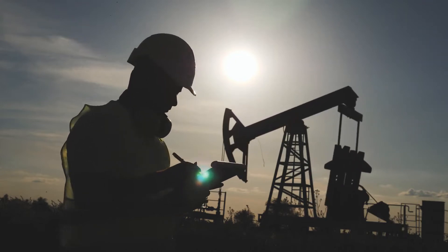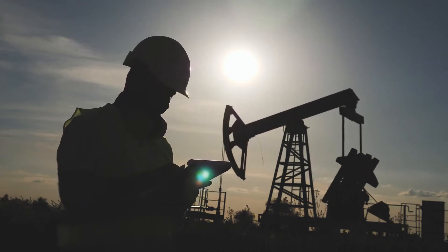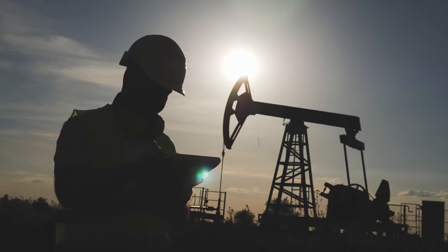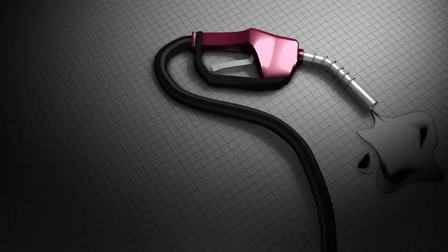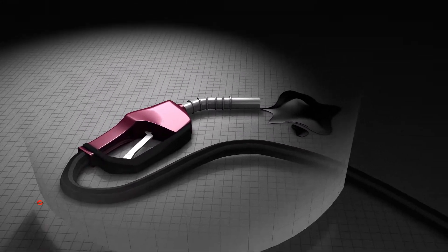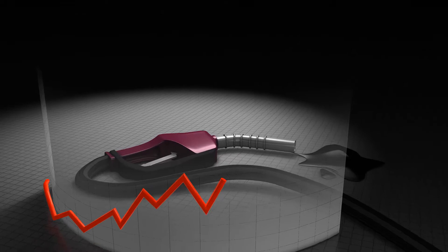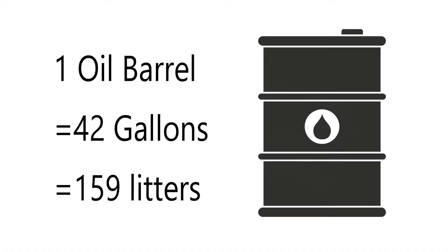Have you ever wondered why the price of oil never stays the same? If you take a look at the price of oil over the past few years, you will notice it's always changing. For example, in April 2020, the price of oil dropped all the way down to zero, while now it's at about $100 per barrel. A barrel is just a unit of measurement used for selling oil — one barrel is equivalent to approximately 42 gallons or 159 liters.